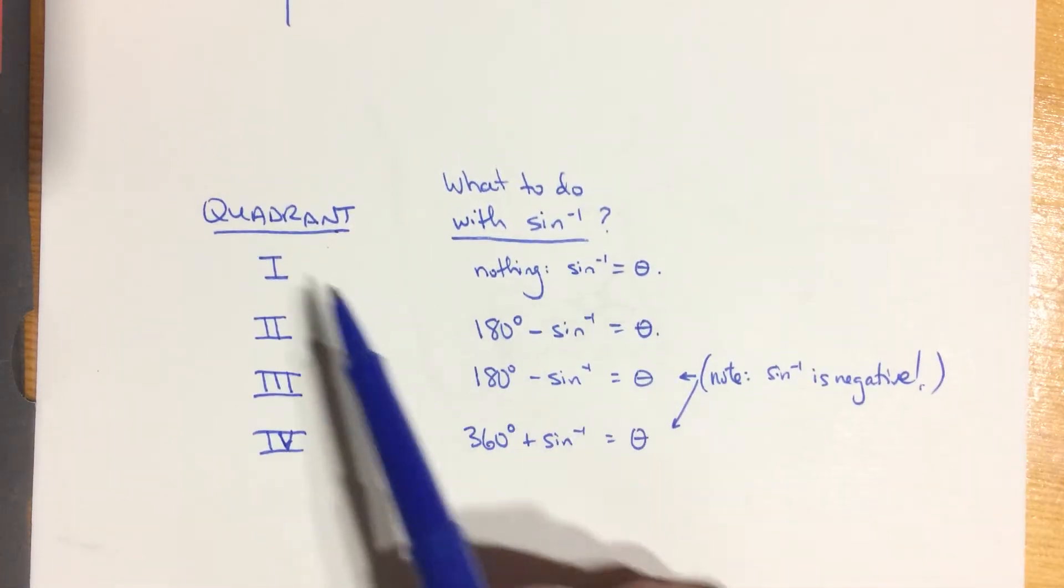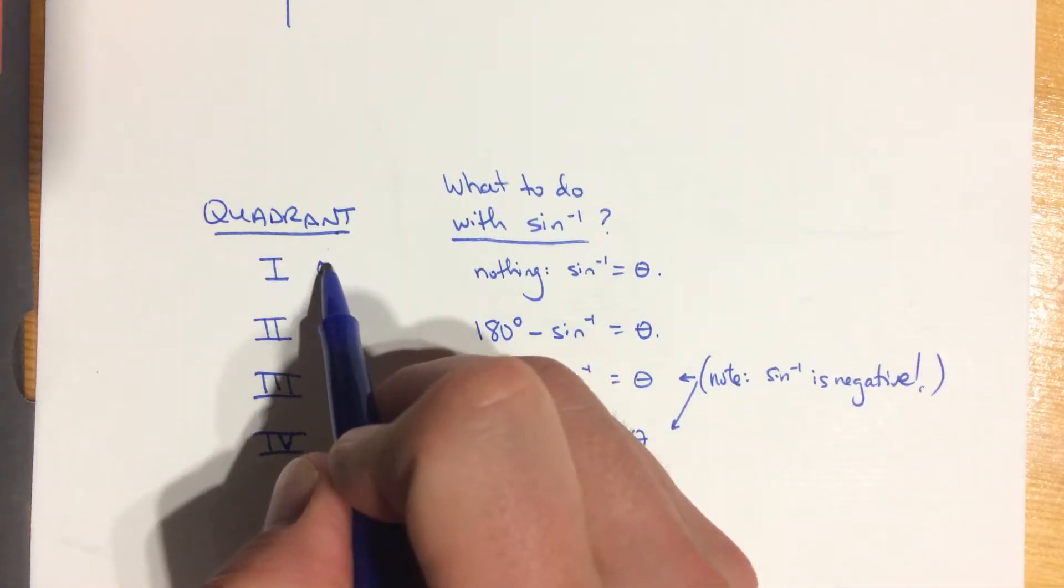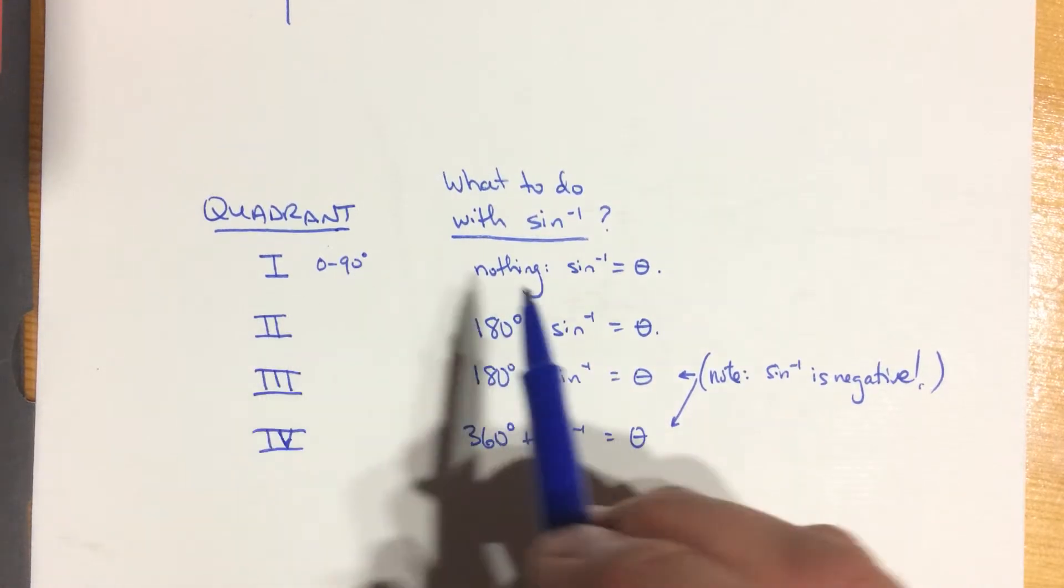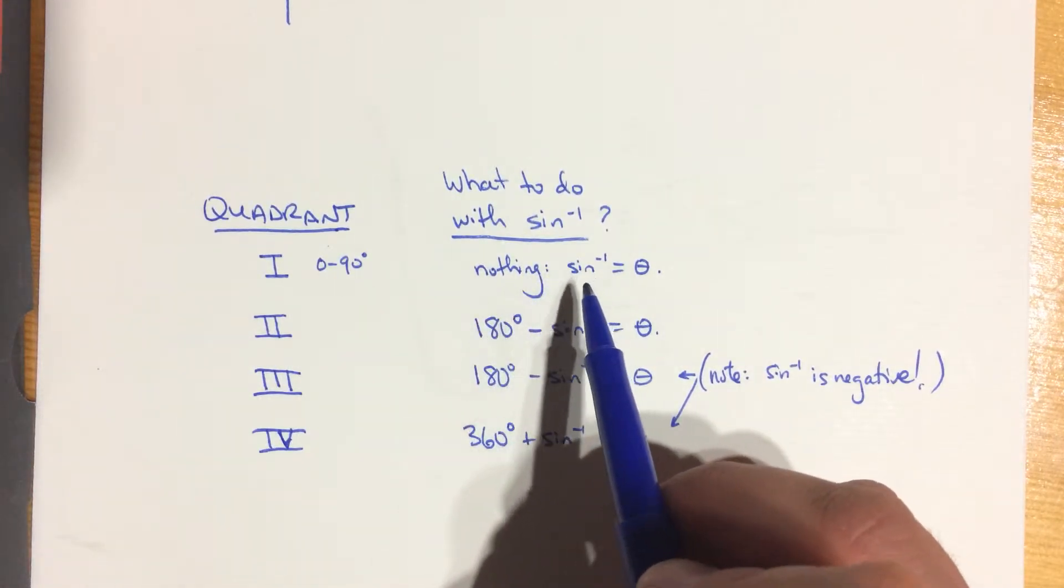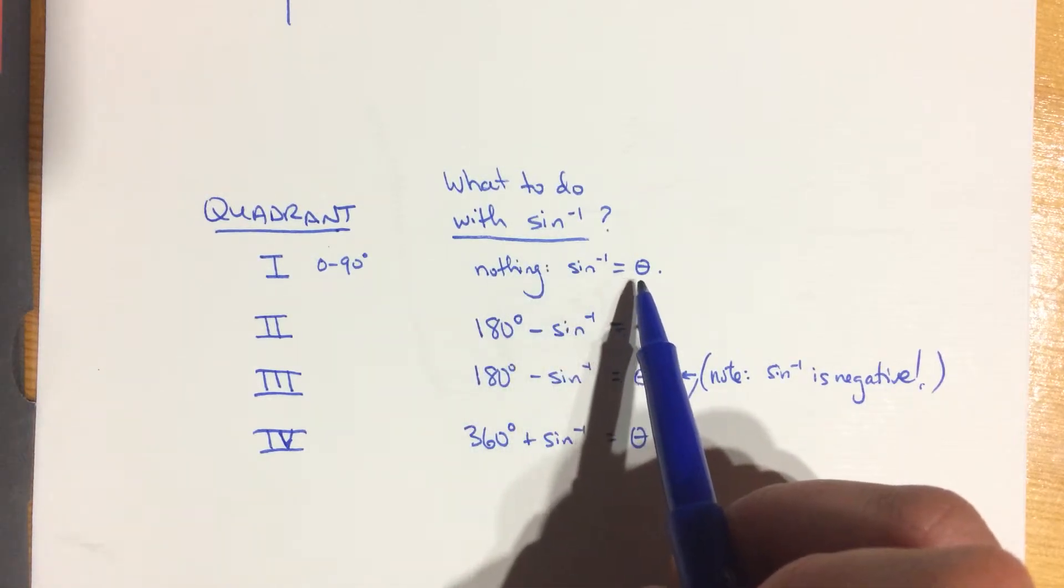Okay, so let's summarize this up. If you have a value in the first quadrant, you know you have an angle that's between sort of 0 and 90 degrees. Then you don't have to do anything. Your sine inverse function will give you theta. That's the nicest one and that's what we experience whenever we have a right triangle.